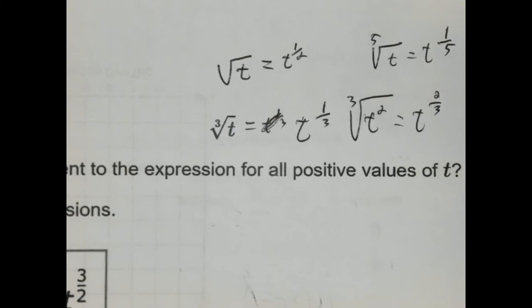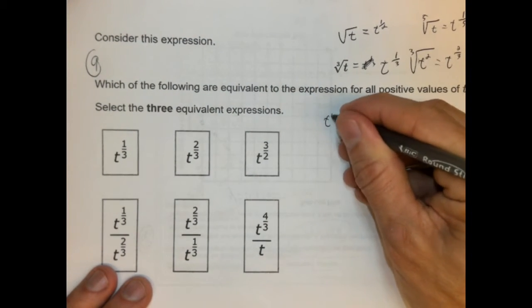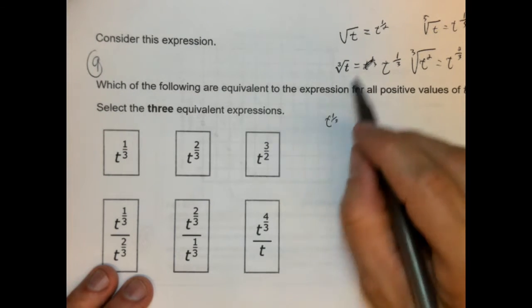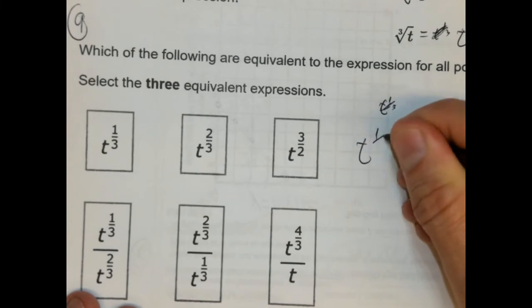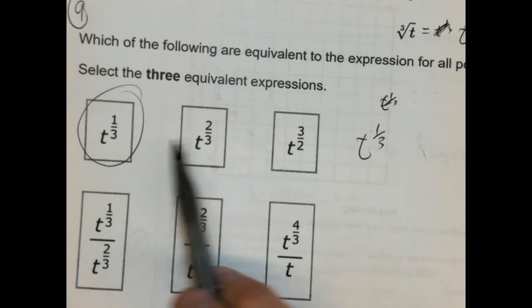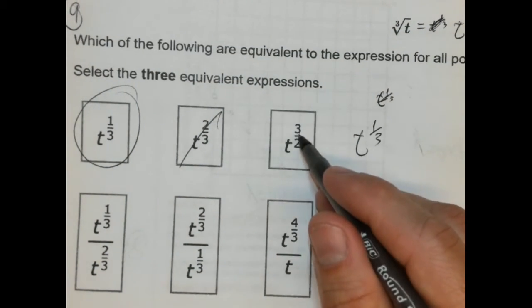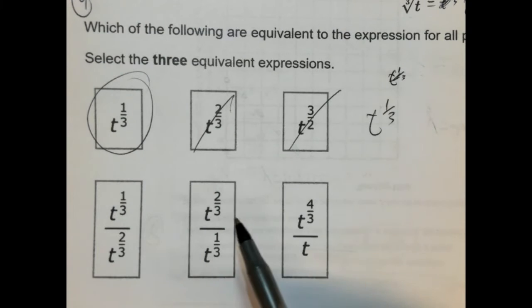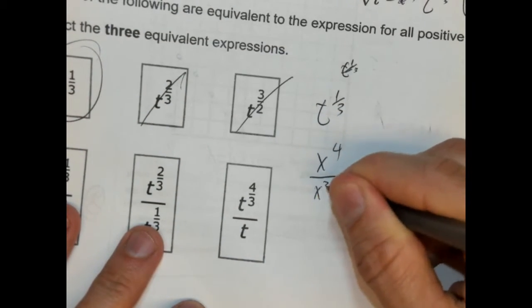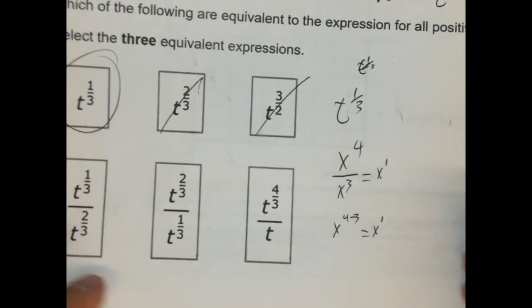Hopefully that helps a bit. So let's change this to t to the one-third — you really need to know that the cube root of t is the same as t to the one-third power. We can immediately identify one answer. Now we need to find which others are equivalent. Two-thirds is not equal to one-third — gone. Three over two is not equal to one-third — gone. Now it comes down to exponential rules: when you divide the same variable, you subtract the exponents. For example, x to the fourth over x to the third equals x to the one, because four minus three equals one.